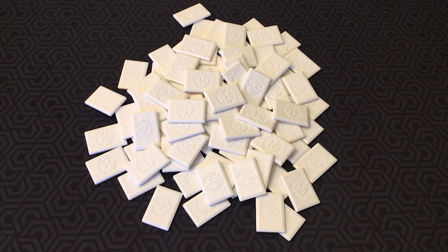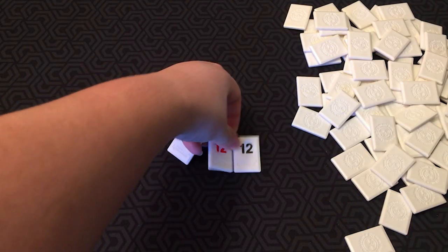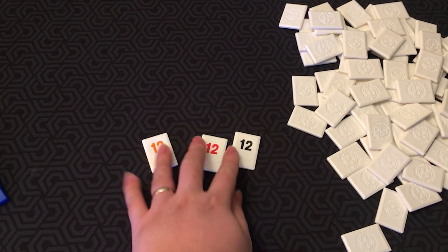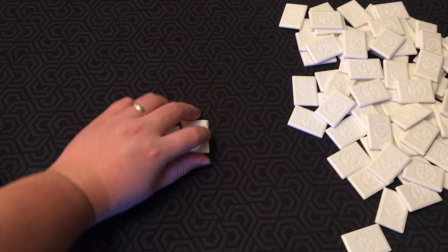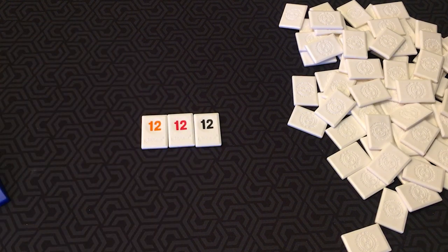Now in this game, there are two types of sets. A group is a set of either three or four tiles of the same number in different colors. So here is a group of three twelves. The tiles come in four colors, numbered 1 through 13. There are also two jokers. We'll get into jokers later.